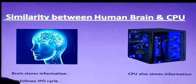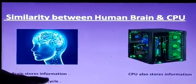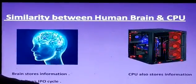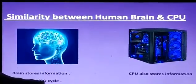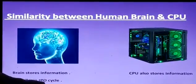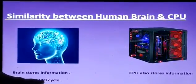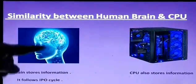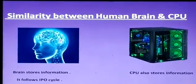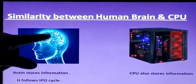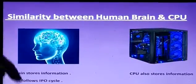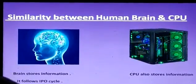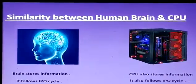Brain follows IPO cycle. IPO means input, process, output. Suppose you have given a maths problem, 2 plus 3. 2 plus 3 is input for the brain. Then brain process it and gives answer 5. Answer 5 is the output.